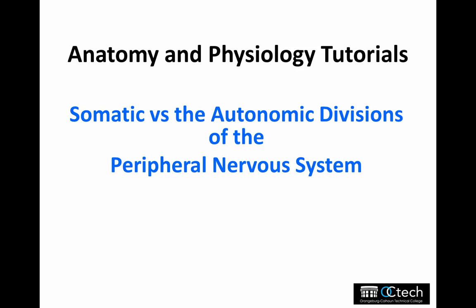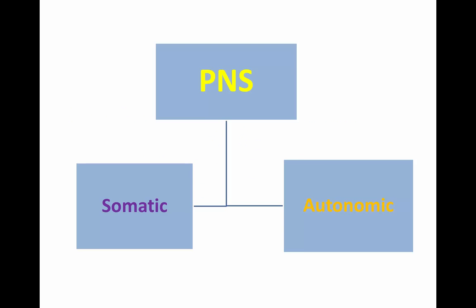Anatomy and Physiology Tutorials: the Somatic and Autonomic Divisions of the Peripheral Nervous System. The peripheral nervous system is divided into two subdivisions: the somatic and the autonomic nervous systems.